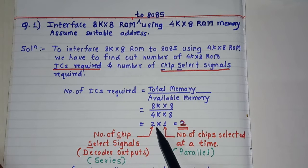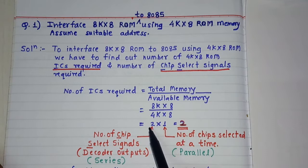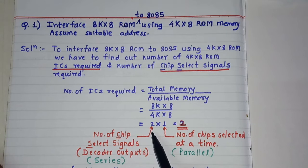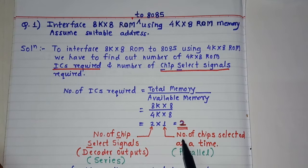The meaning of the first number is the number of chip select signals required to select or enable the particular memory ICs. So 2 number of signals are required to enable or disable the memory ICs. And the second digit indicates the number of chips selected at a time. For this purpose we are using a decoder IC, and one decoder output will select only one memory IC.